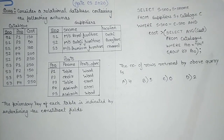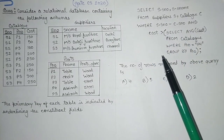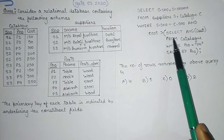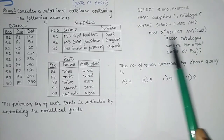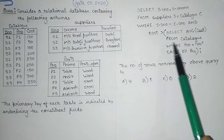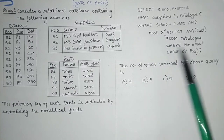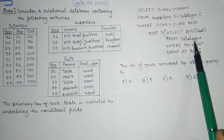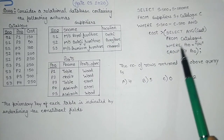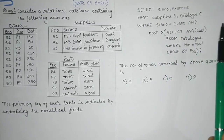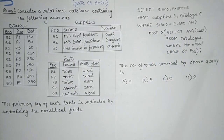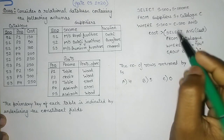We have to find out the number of rows returned by this query. The three tables are catalog, suppliers, and part. By observing the query, you can find out that this is a nested query — a query within a query. This is an independent nested query because there is no relation between the inner query and the outer query. In an independent nested query, we execute the inner query first, then the outer query, since the execution order is bottom to top. So let's solve the inner query first.